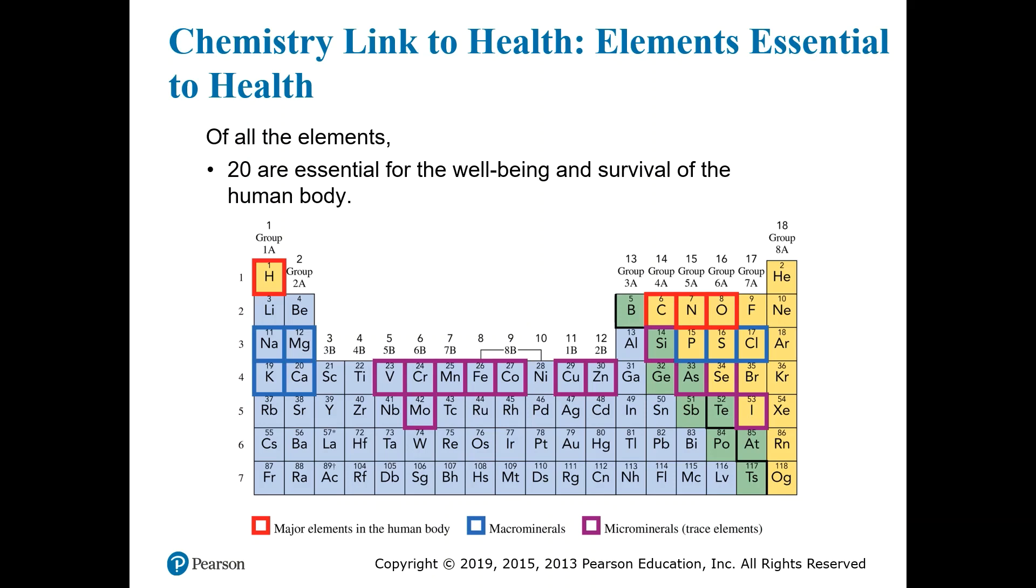Here we can see an important link between chemistry and our health. There are about 20 elements that are absolutely essential for our health and well-being. Of these 20, four of them make up about 96 percent of our body mass, and these include hydrogen, oxygen, nitrogen, and carbon. We are considered carbon-based life forms. Of these four, the hydrogen and oxygen are present mostly in the water in our bodies, which by itself makes up about 55 to 60 percent of our body mass, and obviously water is essential for our survival.